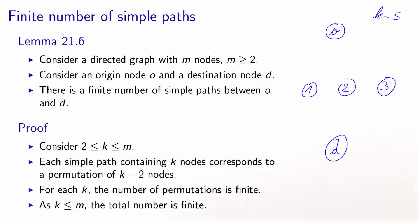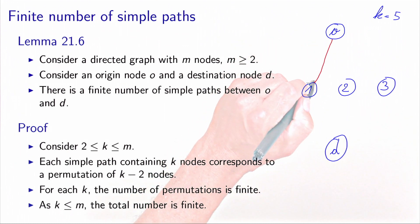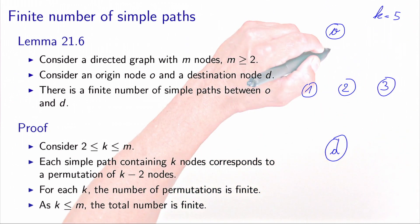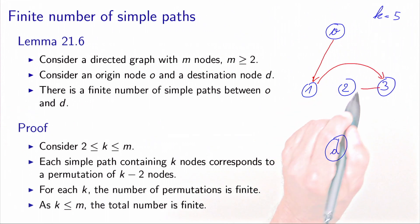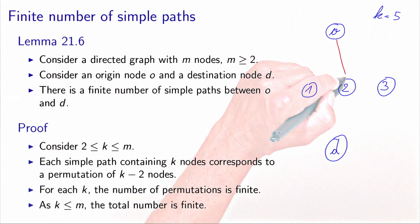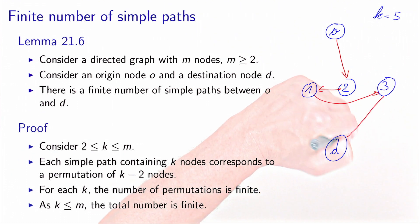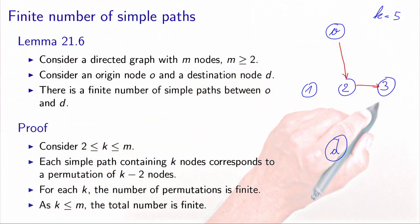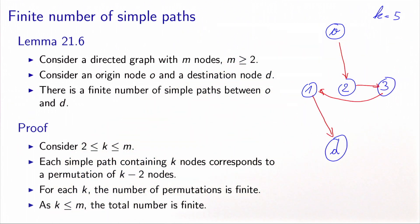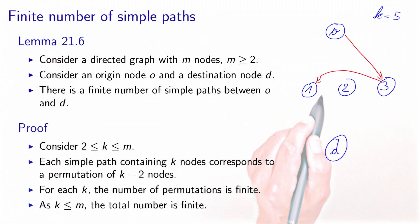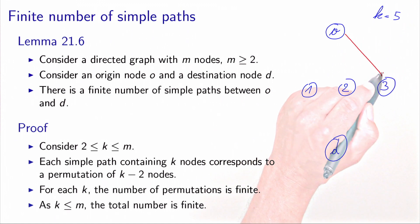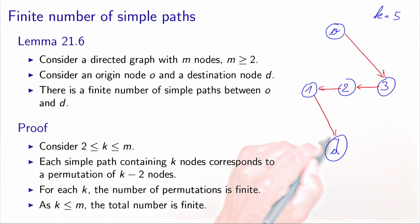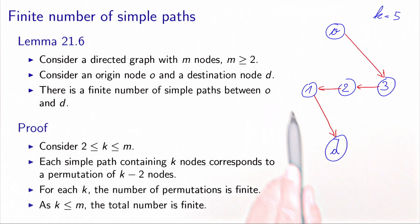Each simple path containing these five nodes corresponds to a permutation of the three intermediate nodes 1, 2, 3. For example: O,1,2,3,D or O,1,3,D or O,1,3,D or O,2,3,1,D or O,3,1,2,D or O,3,2,1,D. So we have six paths which correspond to the possible permutations of these three intermediate nodes.